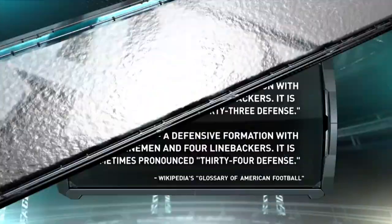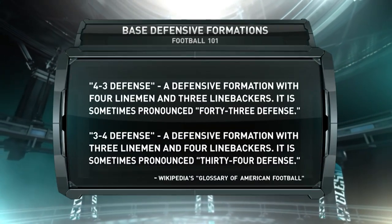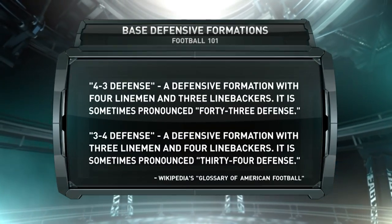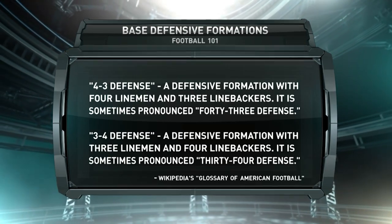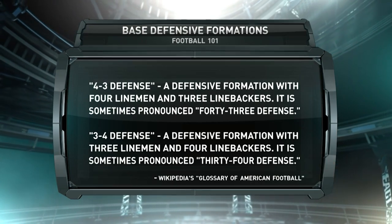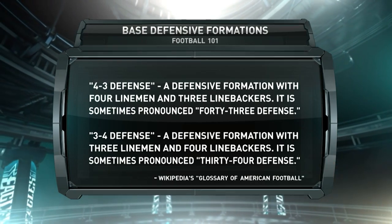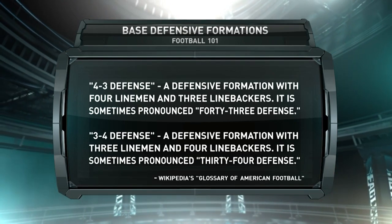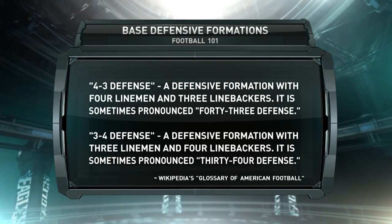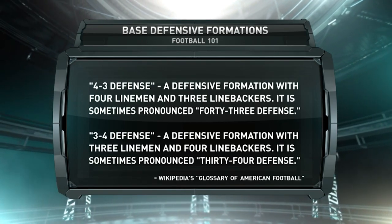We're going to start today by talking a little bit of defense. You hear 4-3, you hear 3-4 — what really is the difference and why do teams employ each? Pretty simple: 4-3 means four defensive linemen and three linebackers; 3-4 means three defensive linemen and four linebackers. The number one reason why teams run one scheme or the other comes down to personnel — do they have more good defensive linemen or more good linebackers? There are also other benefits we'll get into as well.